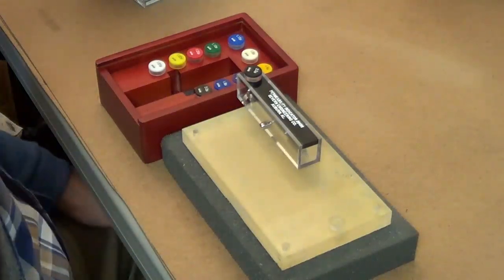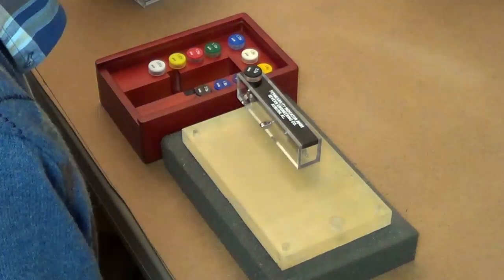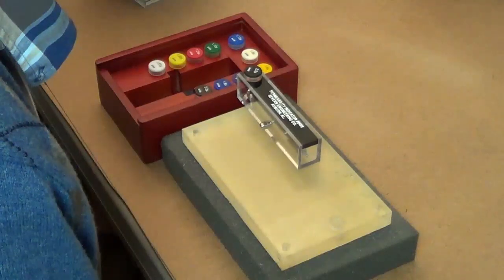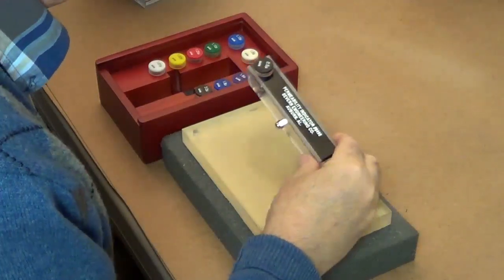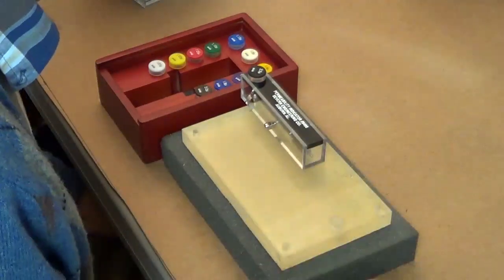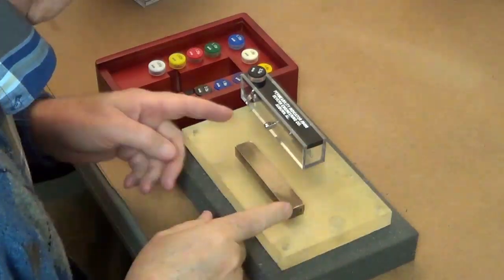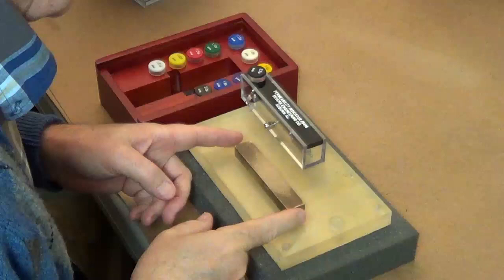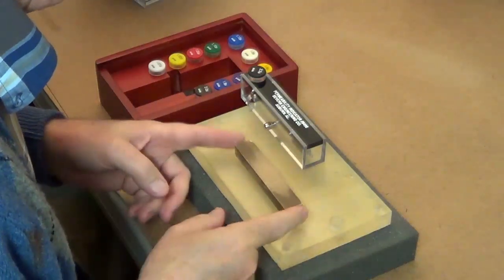Hello. Today we're going to talk about the testing procedure for utilizing the Severin Engineering Permeability Indicator to determine the permeability range, magnetic permeability range, for a metallic test specimen.